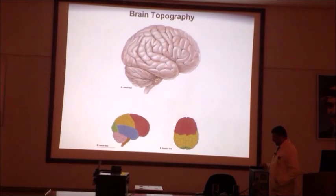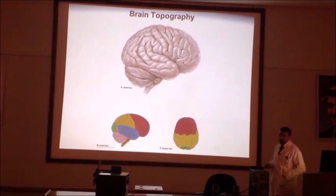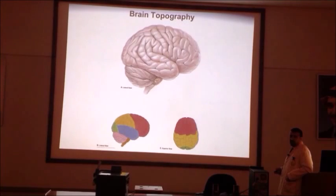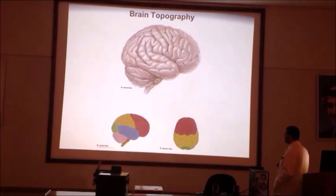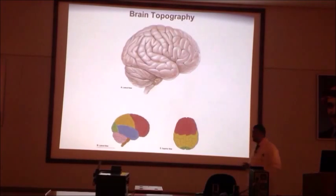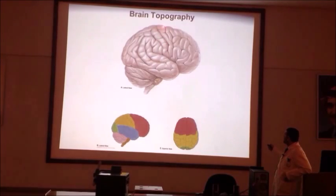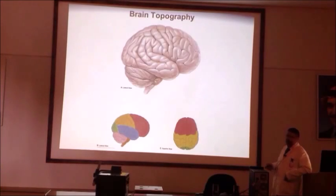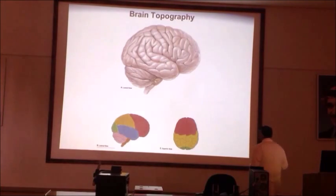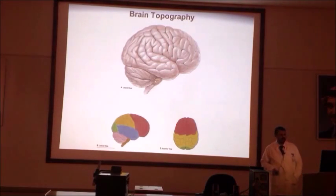We ended up discussing what we call functional localization of the brain. Before we start speaking about this, we need to go over the topography of the brain. When scientists name brain structures — gyri and sulci mainly — they divide the brain into four lobes. Any gyrus within the temporal lobe is called a temporal gyrus; any gyrus in the frontal lobe is called a frontal gyrus. Exceptions include the central sulcus, pre-central gyrus, and post-central gyrus, as well as the lateral sulcus, parieto-occipital sulcus, and calcarine sulcus.